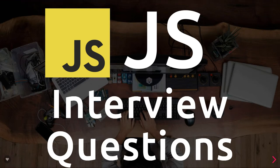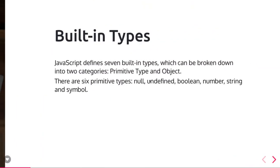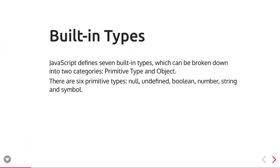Hello and welcome everyone. Let's talk more on JavaScript questions. What are the built-in types? There are six primitive types: null, undefined, boolean, number, string, and symbol. JavaScript defines seven built-in types.